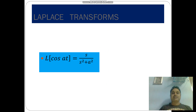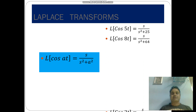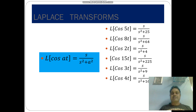L of cos at is equal to s by s square plus a square. L of cos 5t is equal to s by s square plus 25. L of cos 8t is equal to s by s square plus 64. L of cos 2t is equal to s by s square plus 4. L of cos 15t is equal to s by s square plus 225. L of cos 3t is equal to s by s square plus 9. L of cos 4t is equal to s by s square plus 16.